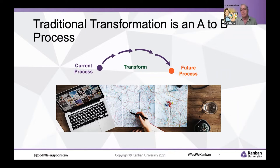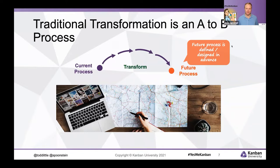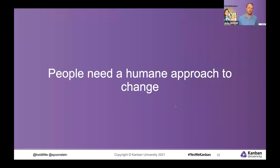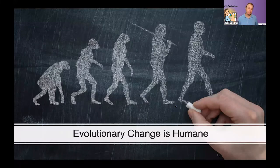There's a second problem: we are dealing with people. People and organizations go through changes in different ways. What Todd is talking about is how people resist change — but they don't resist change necessarily, they resist being changed. From the Kanban University perspective, people need a humane approach to change. Change that is evolutionary in nature is actually humane — the idea of changing little by little, piece by piece, is what we're talking about here.